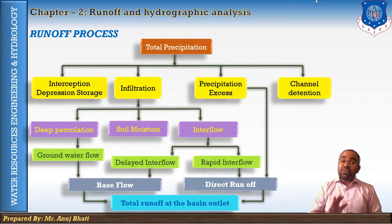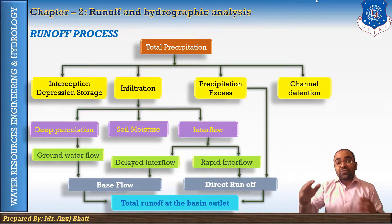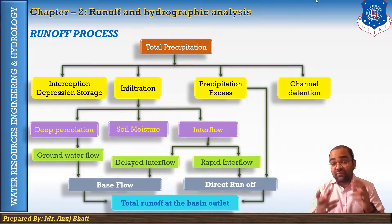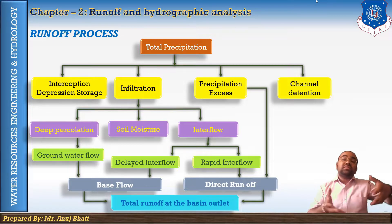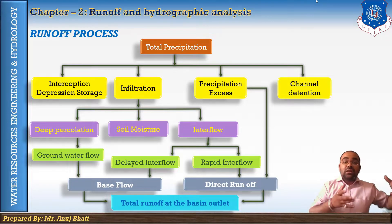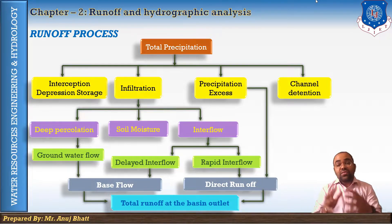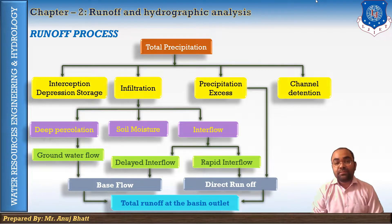If the rain continues, water starts infiltrating into the surface soil. If the rate of rainfall is excessive, or we can say the rate of rainfall exceeds the infiltration rate, then that excessive water starts collecting on the surface, leading to surface detention, or we can say surface flow.